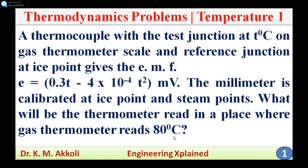Since the gas thermometer reads 80 degrees Celsius, we use the relationship between the thermometer scale in degree Celsius and the thermometric property — here the electromotive force E. We find the thermometric property at ice point, steam point, and 80 degrees Celsius, then use those values to find the temperature read by the thermocouple thermometer.